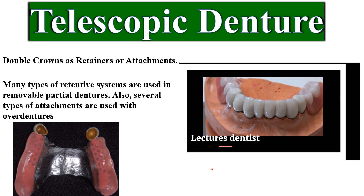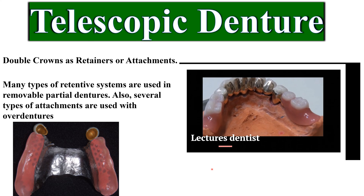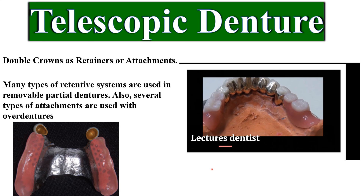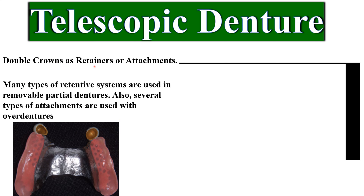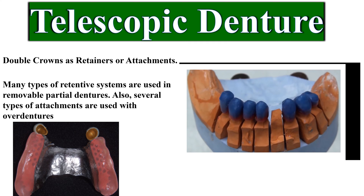The term telescopic denture refers to the type of prosthesis that includes double crowns as retainers or attachments. These retainers or attachments consist of two crowns: the primary or inner crown, which is cemented to the abutment, and the secondary or outer crown, which is attached to the denture. The outer crown may have a simple coping without any anatomic landmarks, or it may have the anatomic contour of the original tooth on its outer surface. The outer crown is fitted onto the inner crown to achieve retention.